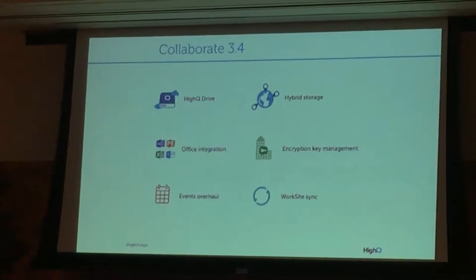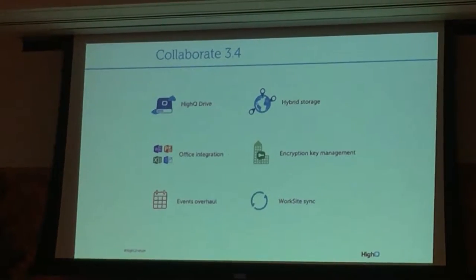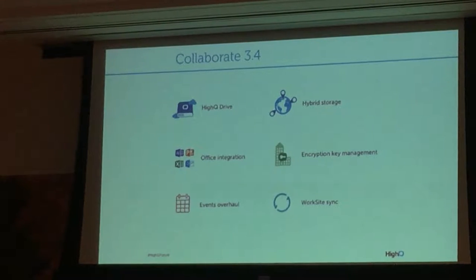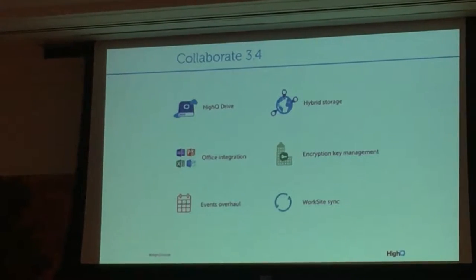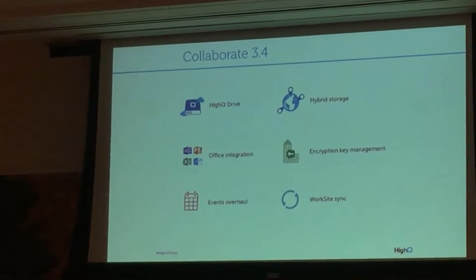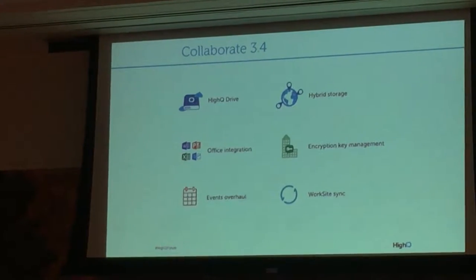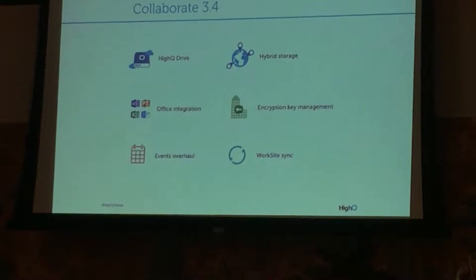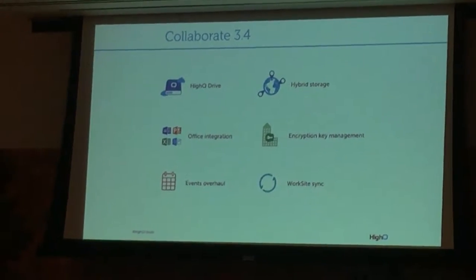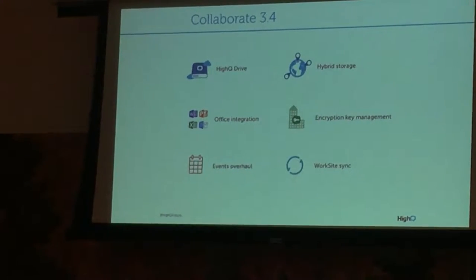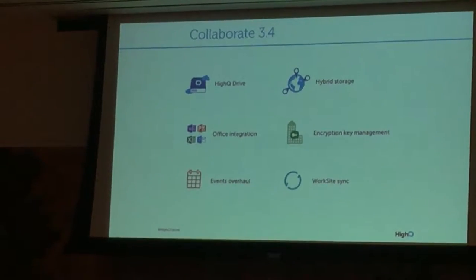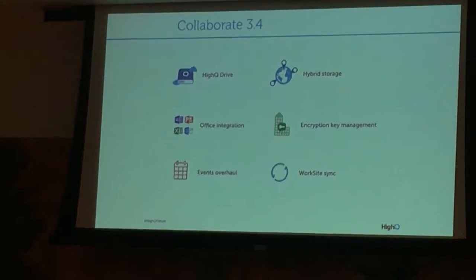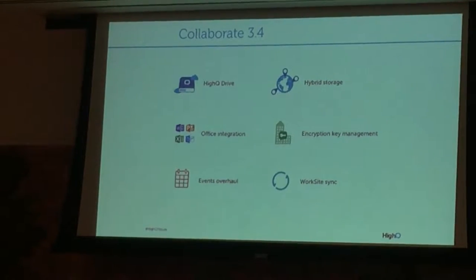Last year we released Collaborate version 3.4, and with that came HiQ Drive. We've just made HiQ Drive available for Mac — I know there are a few clients here in the US that use Macs so that's now available. We also released Office integration and two big security features: hybrid storage and encryption key management. These allow you to store your files anywhere with hybrid storage, and encryption key management allows you to hold the encryption keys yourselves — so we're not holding them. With the API we can now do bi-directional synchronisation with iManage or other document management systems.